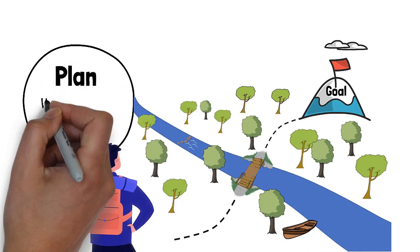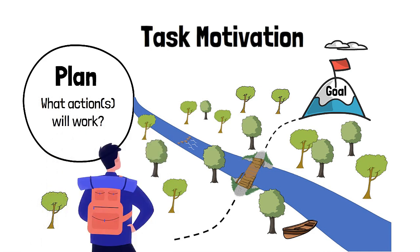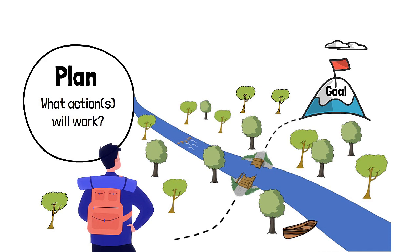As we assess, we also consider what action or actions will work. This is task motivation, where we select or develop a plan that will achieve the situated goal. For situations that are highly familiar, we intuitively select a plan that already worked under similar conditions — we can feel confident in our abilities, sometimes too confident. On the other hand, for situations that are unfamiliar, we often experience feelings of uncertainty, prompting us to deliberate, gather more information, reassess the situation, and discover a workable plan. This means that sometimes we can be motivated by a situation but still fail to act if we lack confidence in our plan — if we lack task motivation.